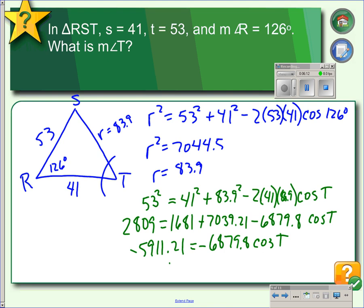Doing the inverse cosine, we find that angle T is 30.8 degrees.